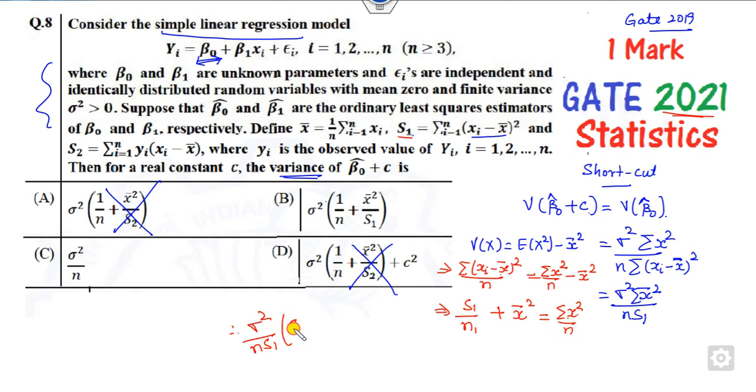If you multiply them, this will be S₁ plus nx̄². Now if you go through this, what will happen? This one will be cancelled out, so it's 1/n and Σx²/n. So the right answer is B.